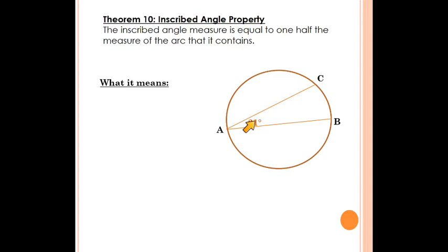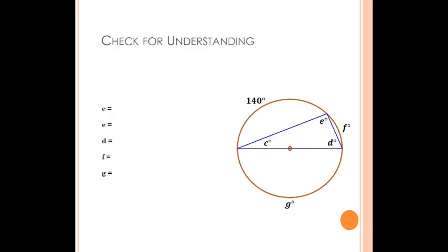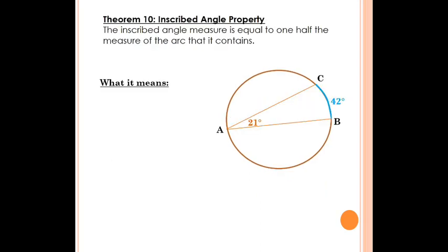Our property here is going to be a little different than what we learned about central angles. The inscribed angle is half the measure of the intercepted arc. So we can write that the measure of angle CAB is equal to one half the measure of arc CB. Now we know if it's an inscribed angle, it's half the measure of that arc.